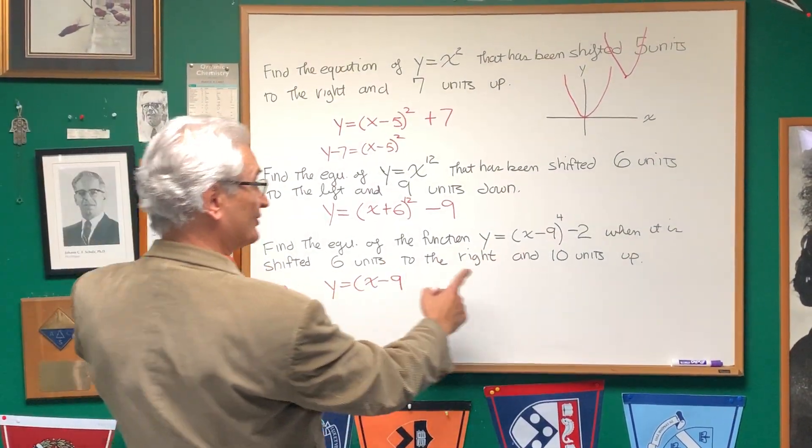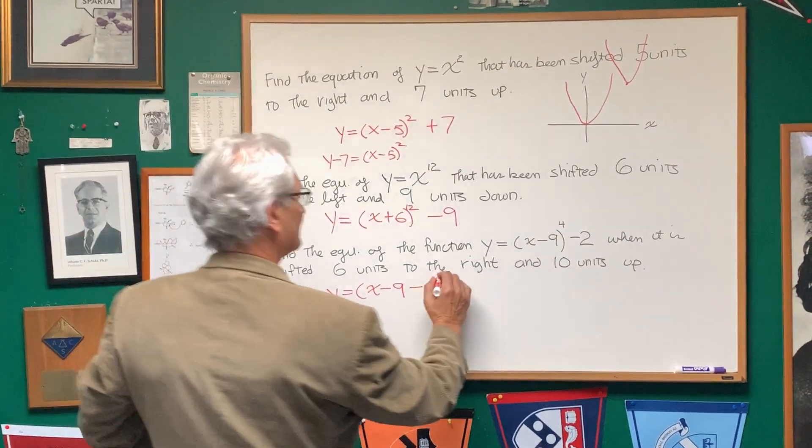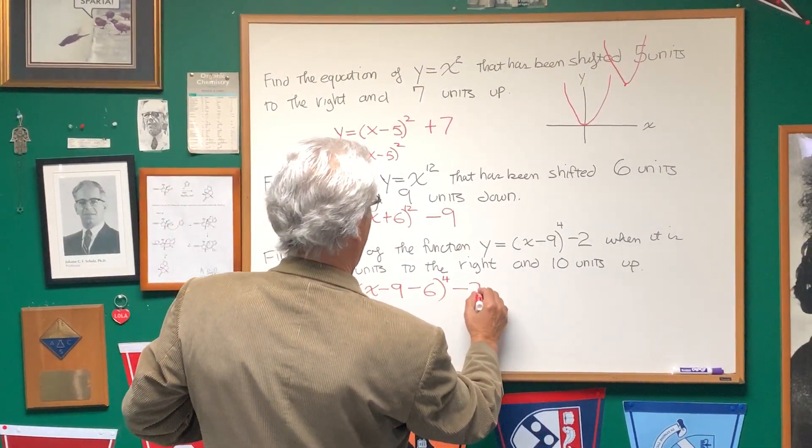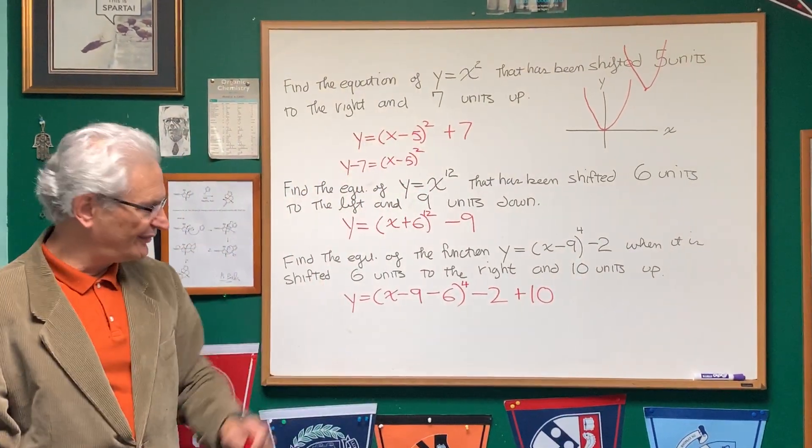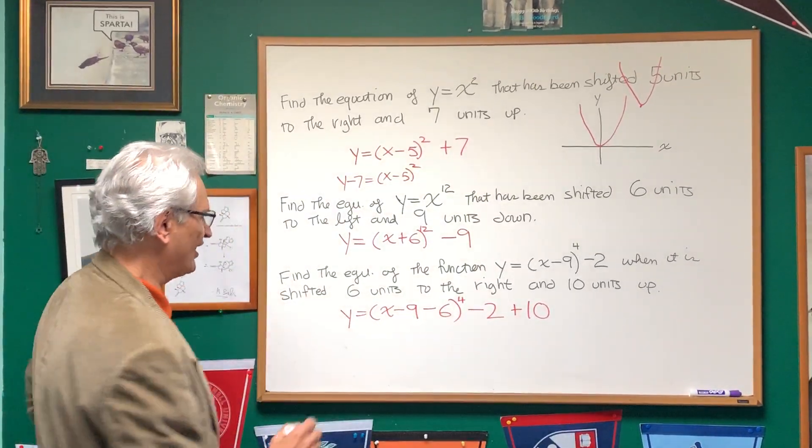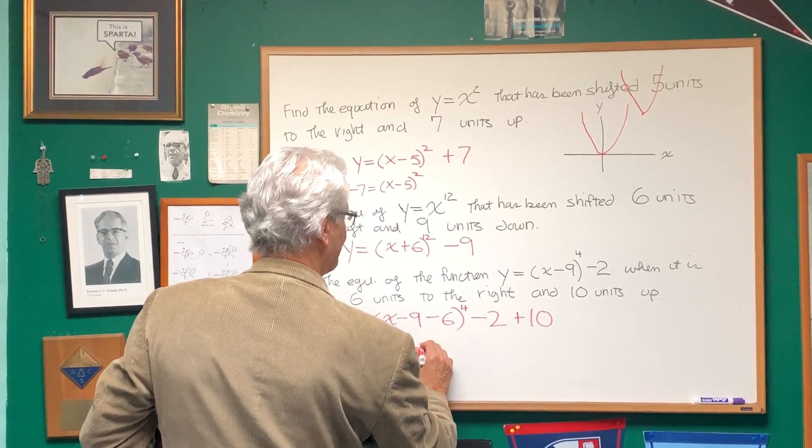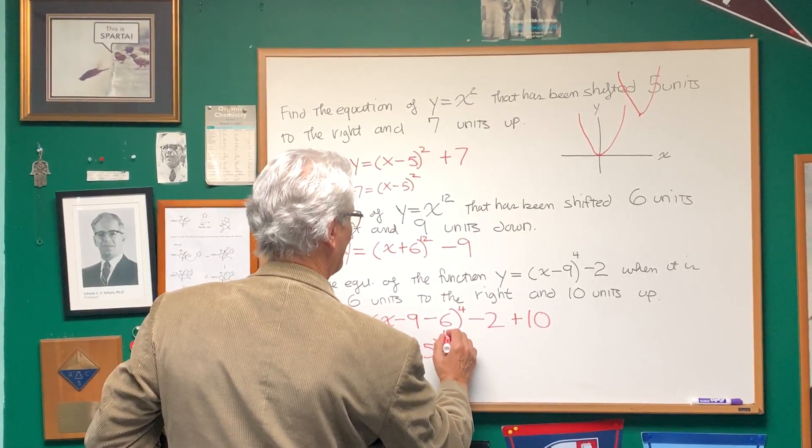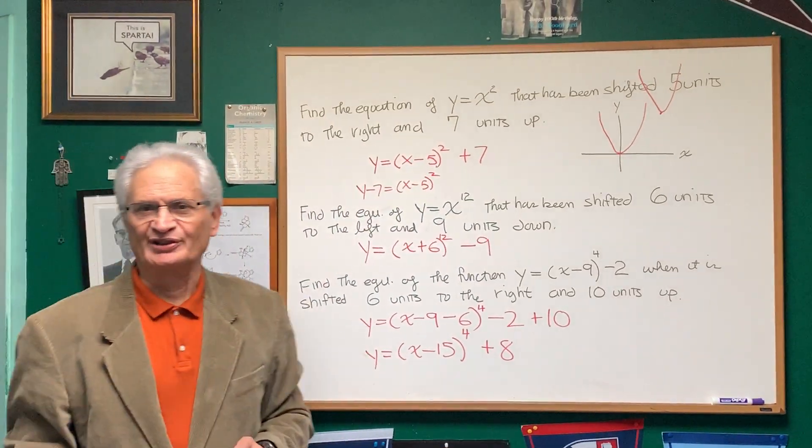units up, we're going to be consistent with the direction of the vertical shift by adding ten. So if we simplify this, it's y = (x - 15)⁴ + 8, and there's our solution.